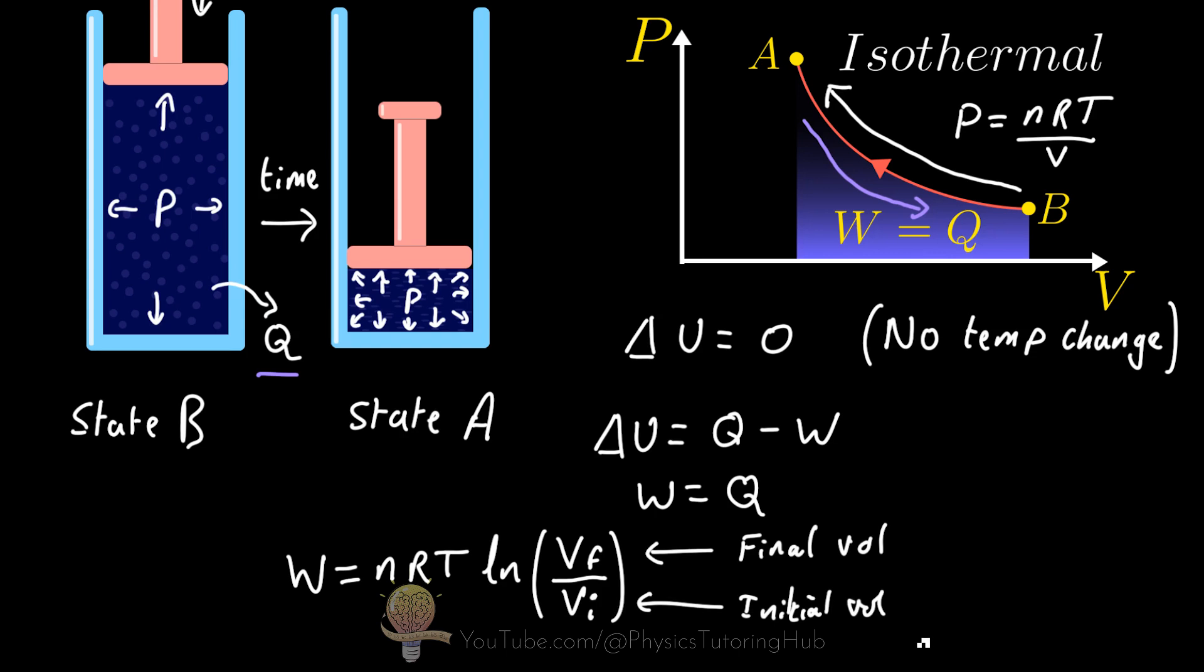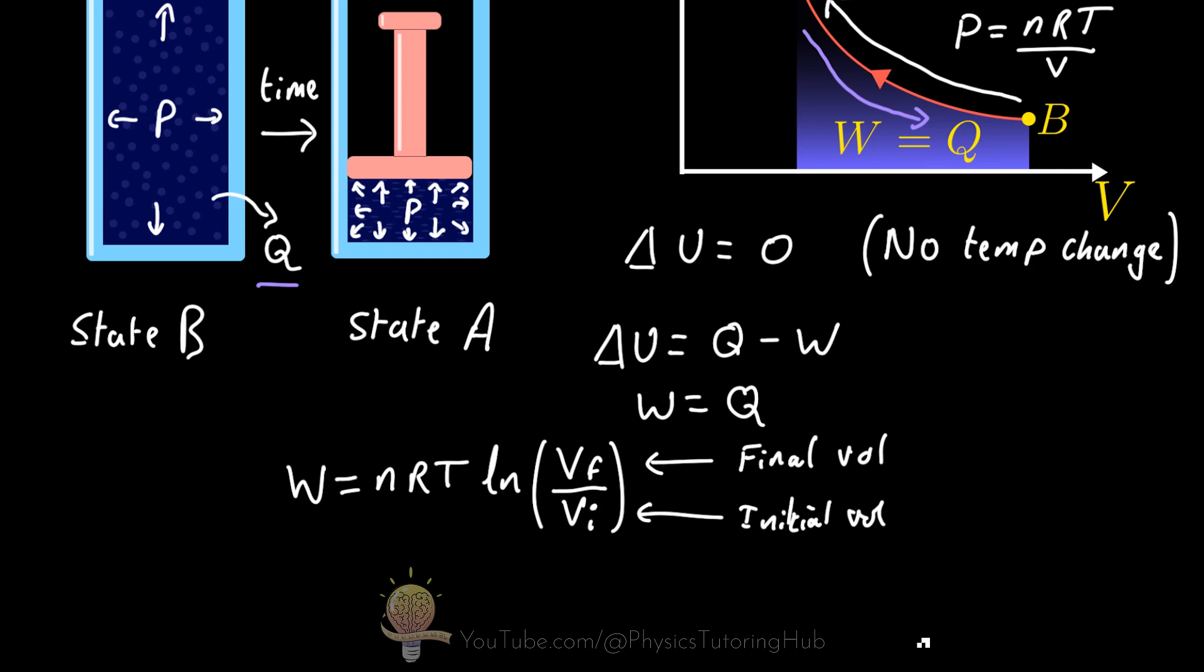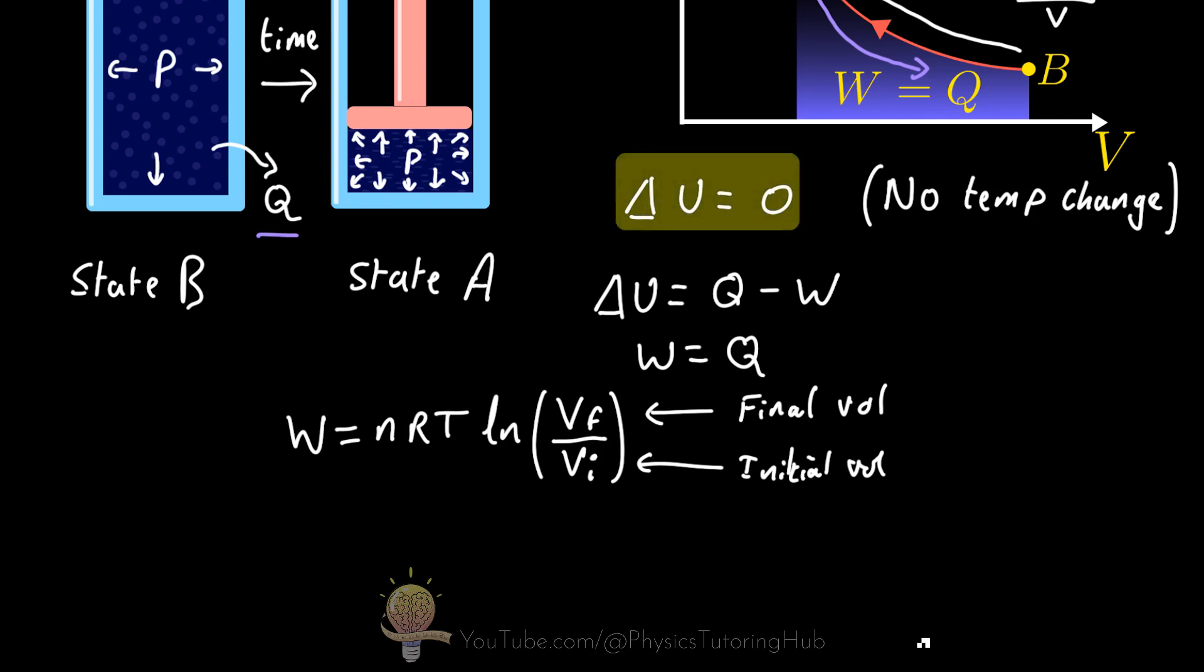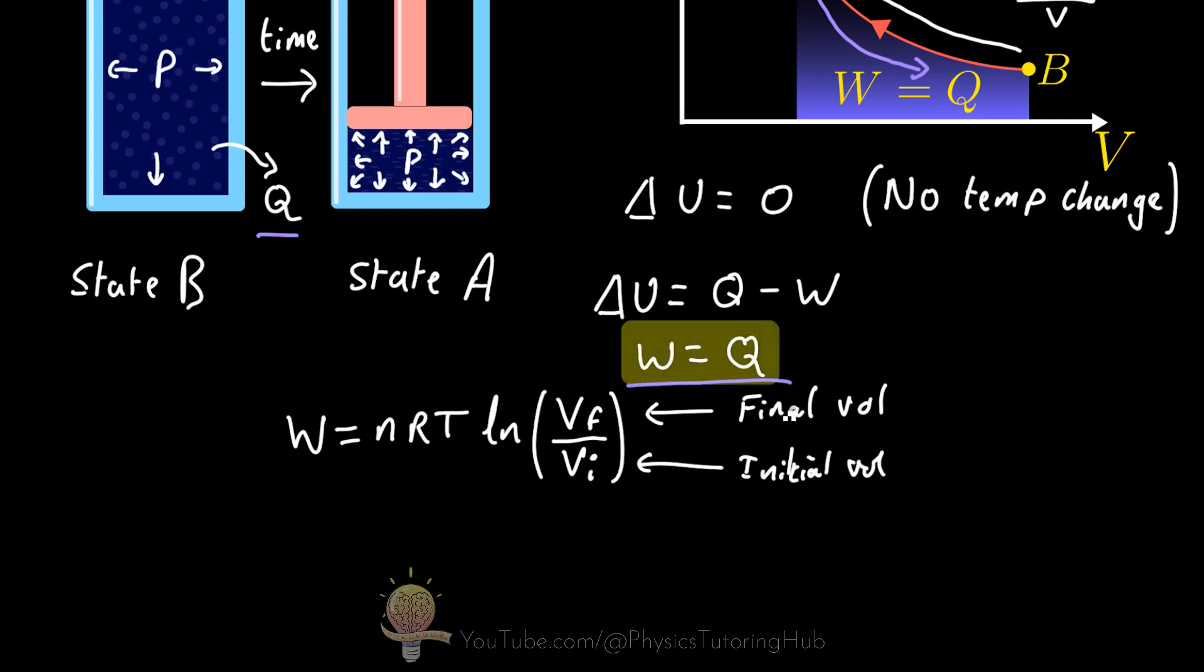We're going to do a worked example in a minute to make this clearer. But because our internal energy doesn't change in an isothermal process, we also know that the work done is equal to the transfer of heat into the system. So we can also conclude that the heat transfer is also equal to this equation up here.